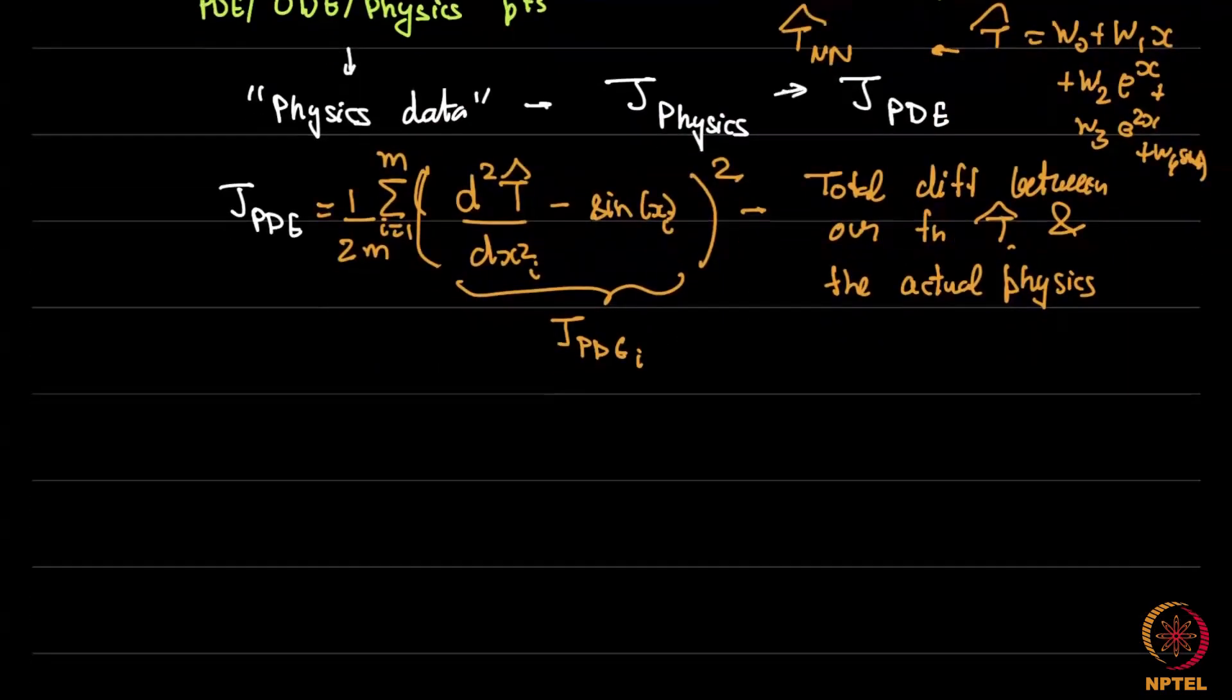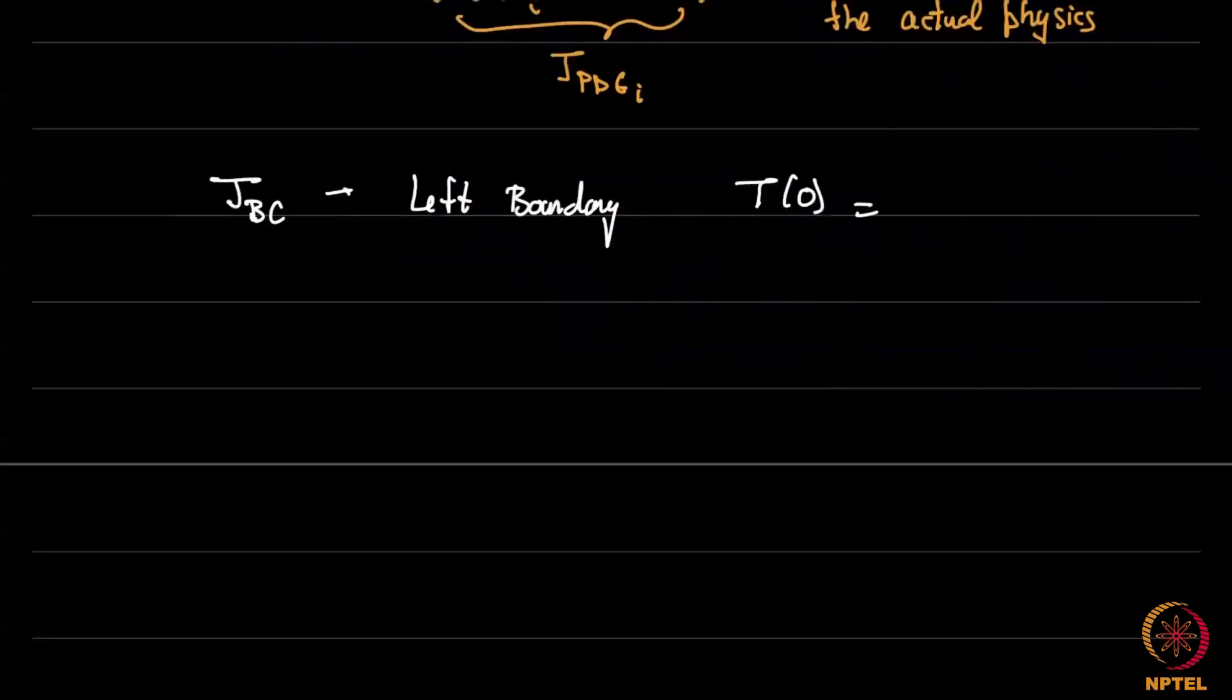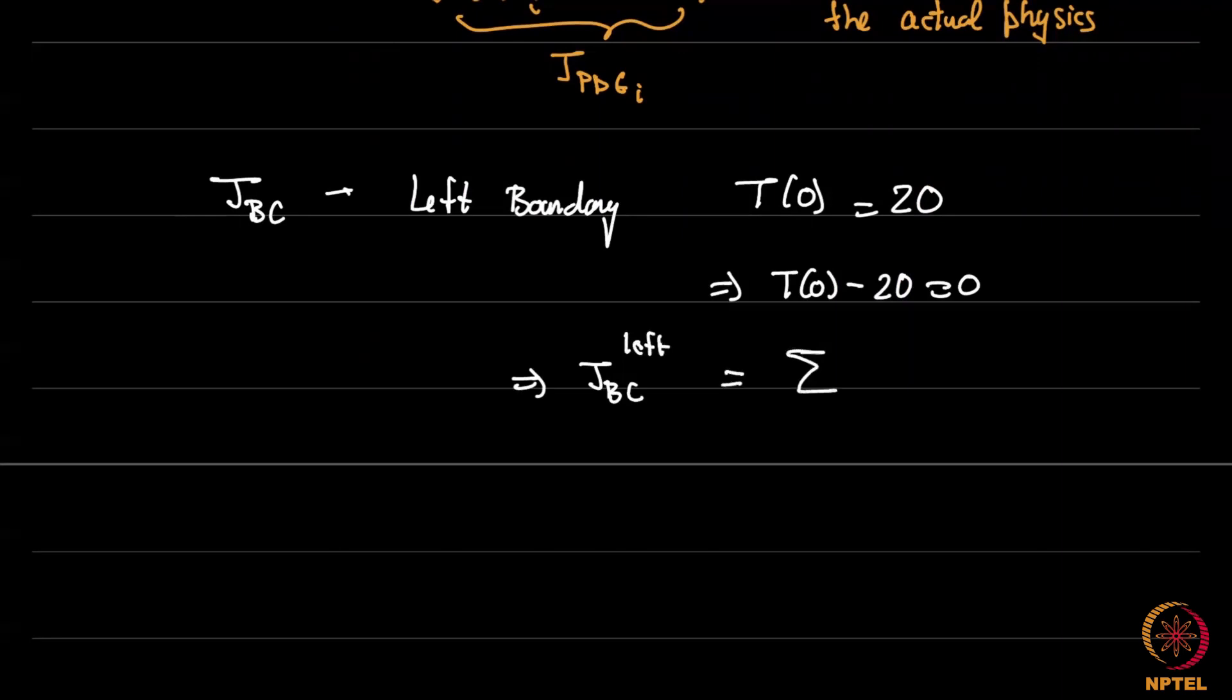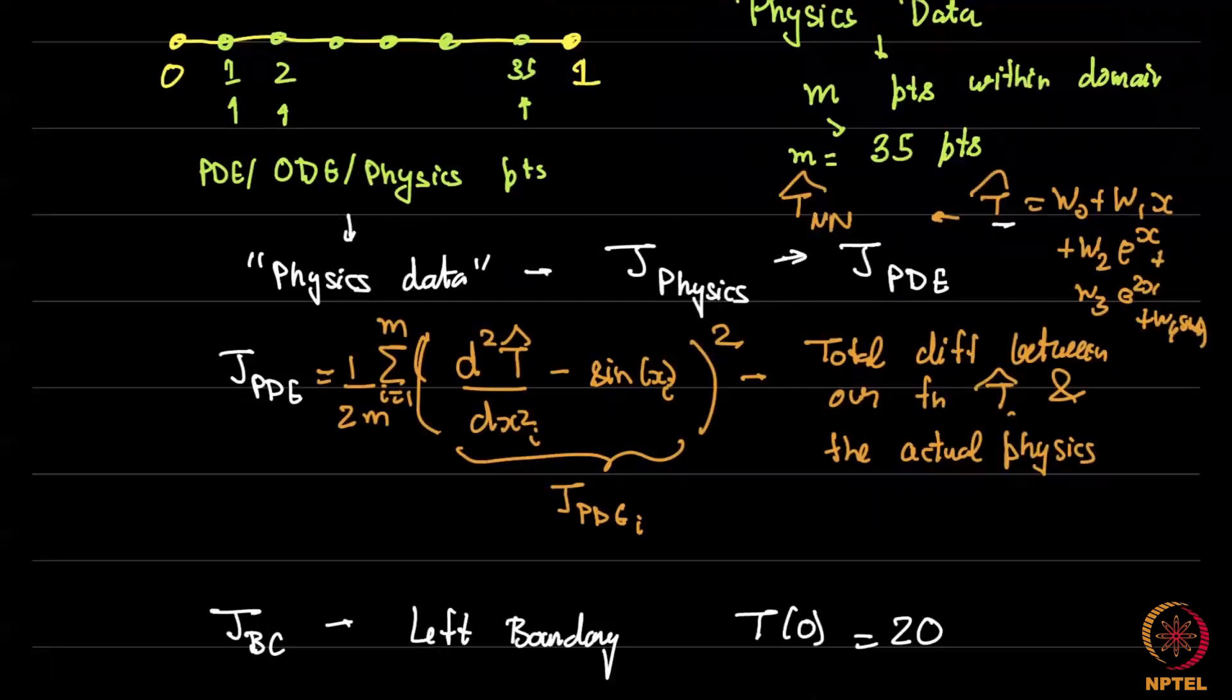So just like we had a J_PDE we should have a J_boundary condition and if it is an initial value problem we should have a J_initial condition. I will show you how to do a J_boundary condition right now. So J boundary condition is going to be let us first take the left boundary. So the left boundary says that T at 0 should be I took some value 20. So of course what you want is to say that T(0) - 20 = 0. So what we do is J_BC from the left will be you actually find out what T̂ of 0 is.